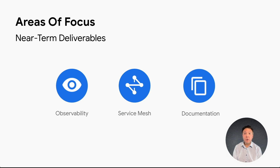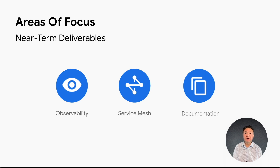Observability improves the ability for developers to understand how their RPCs are functioning, improves notifications, and helps troubleshoot issues when they arise. Proxy-less service mesh enhances the capabilities that gRPC makes available when deployed in a service mesh environment. Documentation delivers a suite of assets that can educate and help coders move through the different phases of the development process. Let's go into more detail regarding each one of these topics.